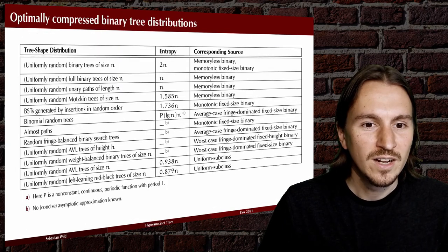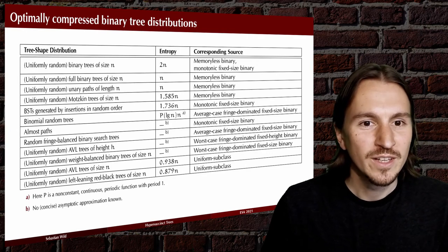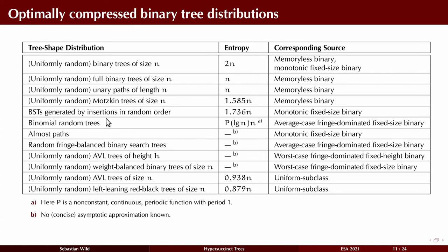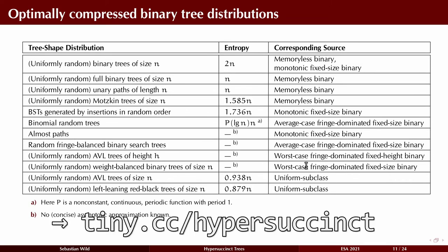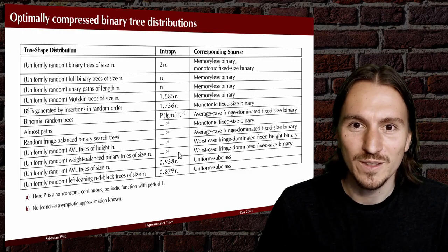And from the computer science perspective, here is a list of concrete distributions over binary trees which can be expressed in the language of these sources. So for example, random binary search trees, where we start with a random permutation and insert elements in random order, can be represented as a monotonic fixed size source, and we can optimally compress them. And similarly, for uniformly random weight balanced binary search trees, they can be expressed as a fringe dominated fixed size binary tree source. And again, we get an optimal compression. Here, the entropy is not known, but whatever it is, we will meet it in expectation.